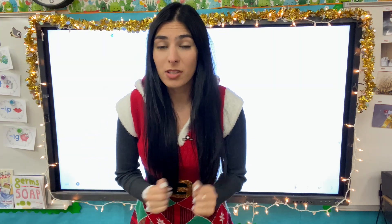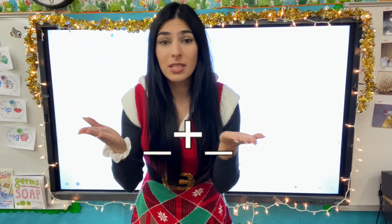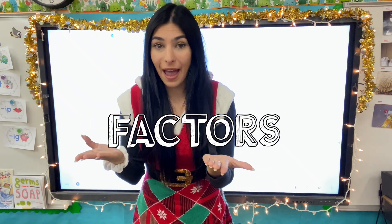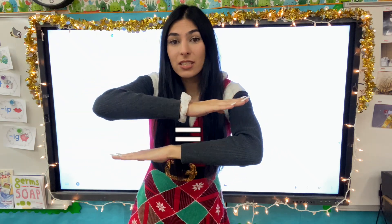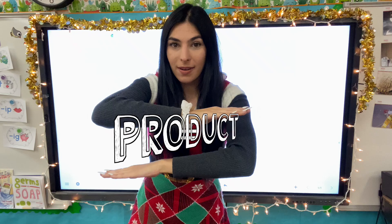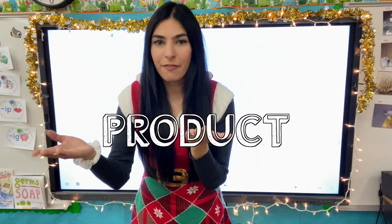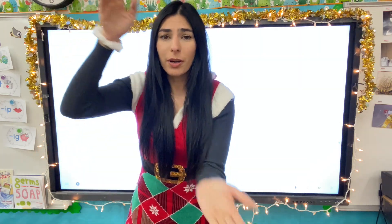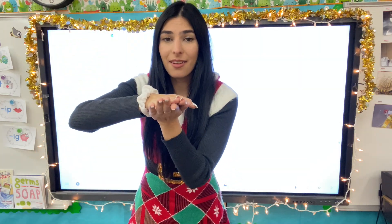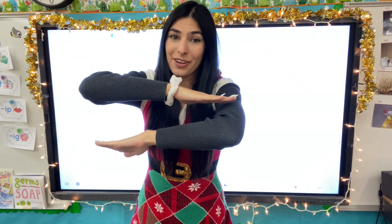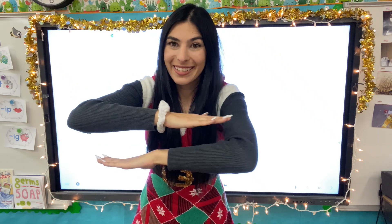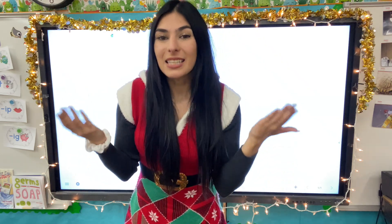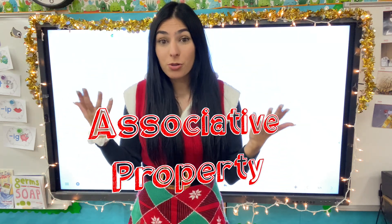When we're talking about multiplication sentences, we have a couple of different parts. We have the two numbers that we are multiplying — those are called factors. The answer is called the product. I like to think of the factors as the pieces; when we put those factors together, it makes the final product.